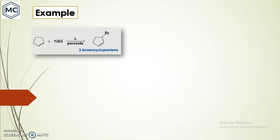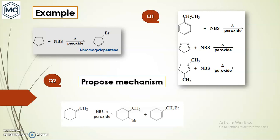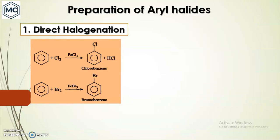You can see here that the allylic position gets brominated. You should write down the product of this reaction and propose a mechanism. The third method - preparation of aryl halide - you can prepare aryl halide from direct halogenation. Direct halogenation is possible by using FeCl₃, FeBr₃, or AlCl₃.